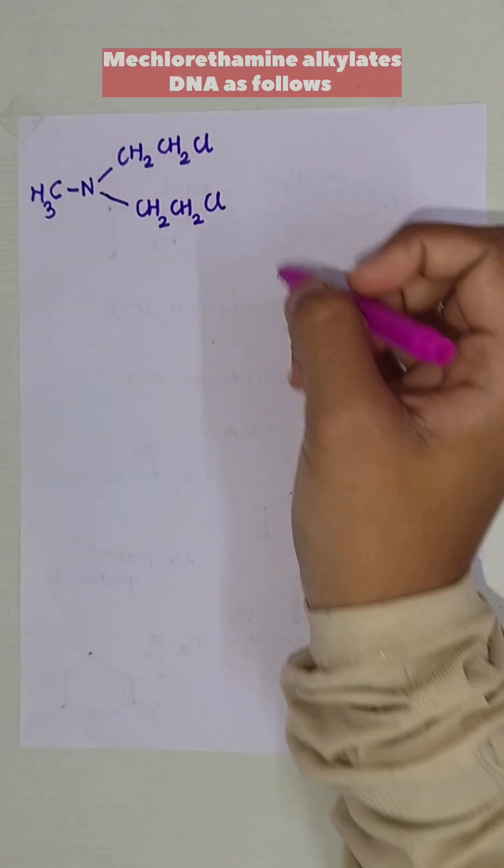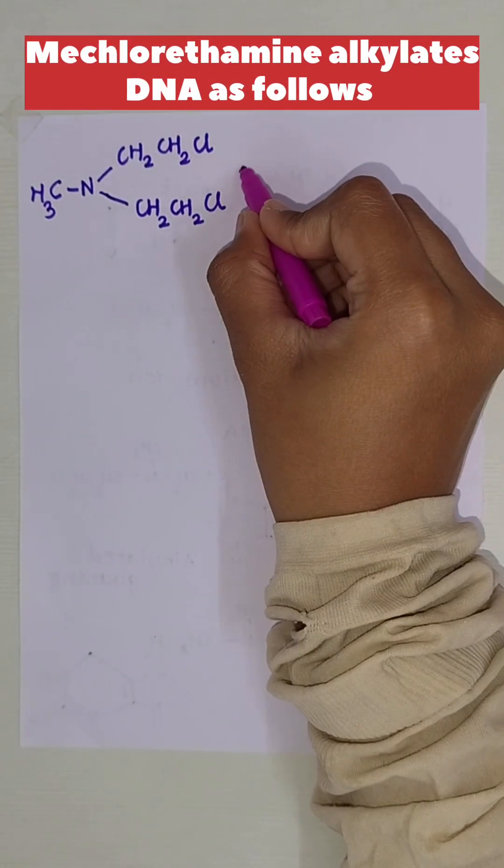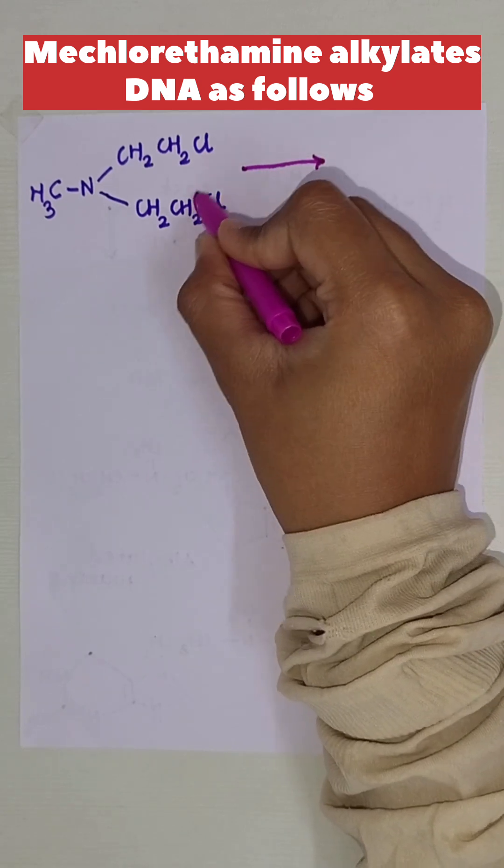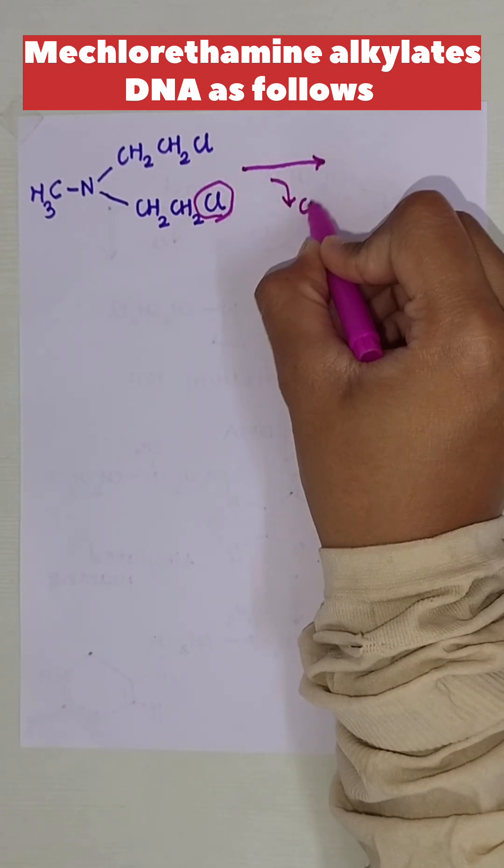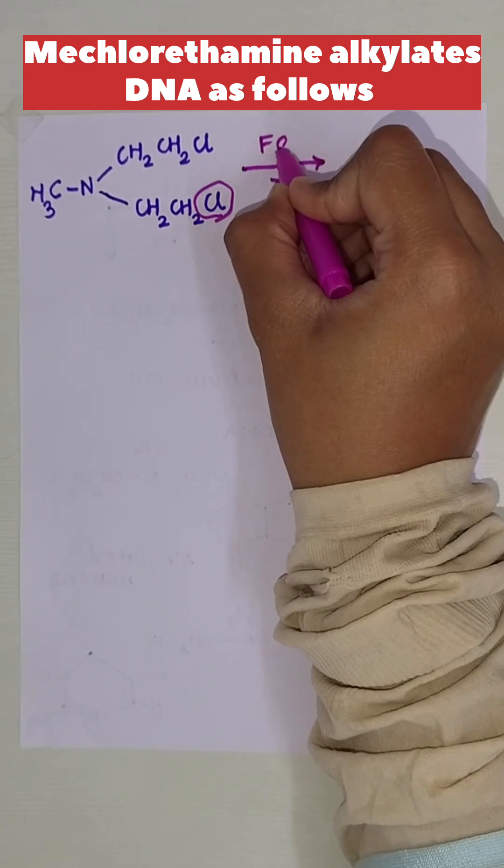Mechlorithamine alkylates DNA as follows. In the first step, the chlorine gets eliminated, and it is a fast step.